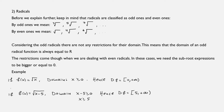Let's move to the second problematic case: radicals. Radicals are classified as odd ones — cubic root, fifth root, seventh root, and so on — and even ones — square root, fourth root, sixth root, and so on. For odd radicals, there are no restrictions; the domain of a function with only odd radicals is always ℝ. The restrictions come when we work with even radicals, where we need the sub-root expression to be greater than or equal to zero.